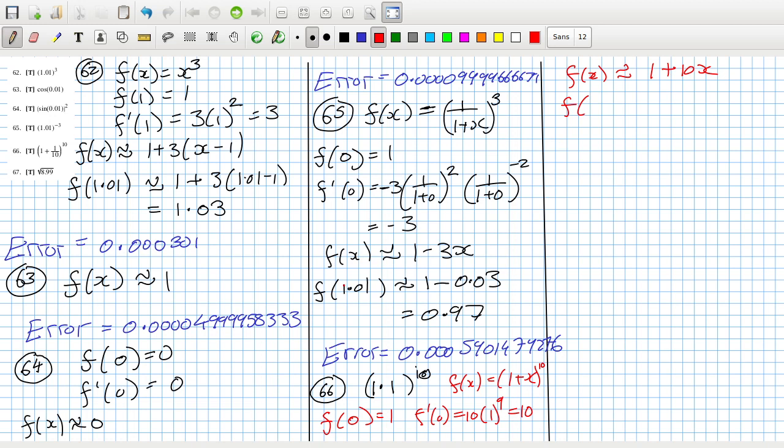So f of 0 is 1, and f derivative of 0 is 10 times 1 power 9, so that's 10. So the function is approximately 1 plus 10x. That means f of 0.1 would equal 2. Yeah, so the error is 0.5, okay.